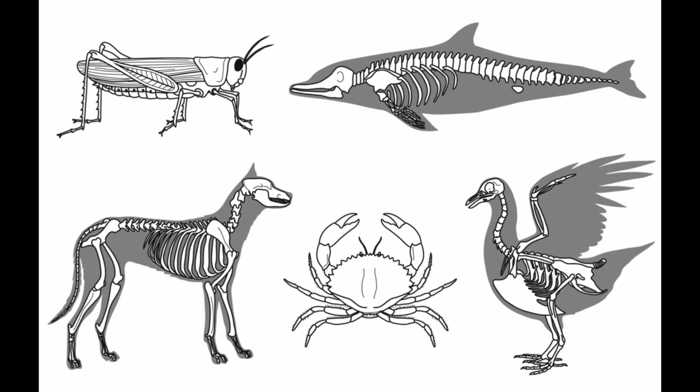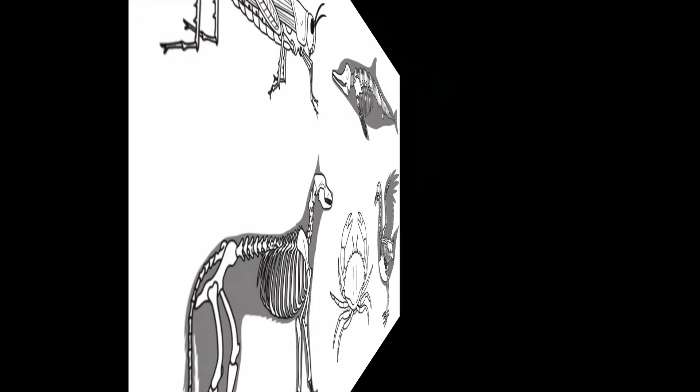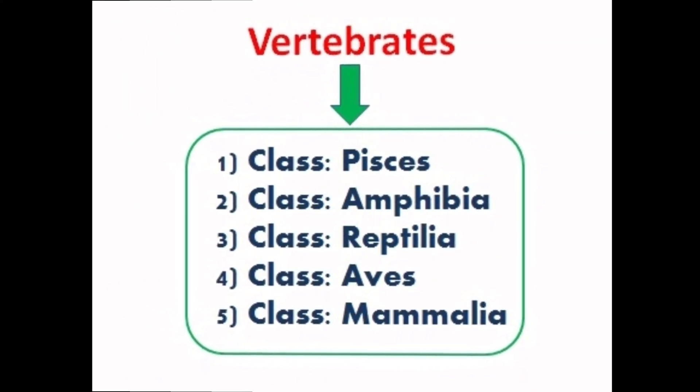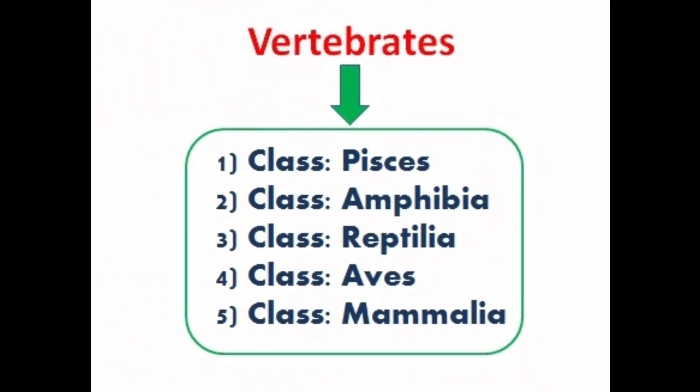On the basis of their body structure and development, vertebrates are further divided into five classes. They are Pisces, Amphibia, Reptilia, Aves, and Mammalia.